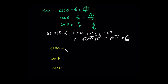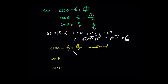Cosecant is the reciprocal of sine, which is r over y. R is root 2, y is zero. Since y is zero, cosecant is undefined. Secant is r over x: r is root 2, over x which is also root 2. This equals 1.